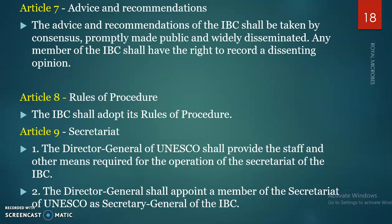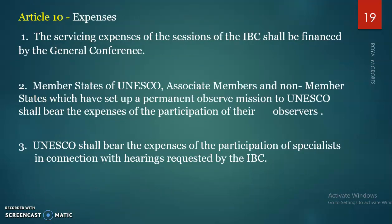Article 8 covers Rules of Procedure: the IBC shall adopt its own Rules of Procedure. Article 9 covers the Secretariat: the Director General of UNESCO shall provide staff and other means required for the operation of the Secretariat of the IBC and may appoint a member of the Secretariat as Secretary General of the IBC. Article 10 deals with expenses: the servicing expenses of sessions must be financed by the General Conference. Member states, associate members and non-member states with permanent observer missions shall bear the expenses of their observers' participation, while UNESCO shall bear the expenses of specialists.